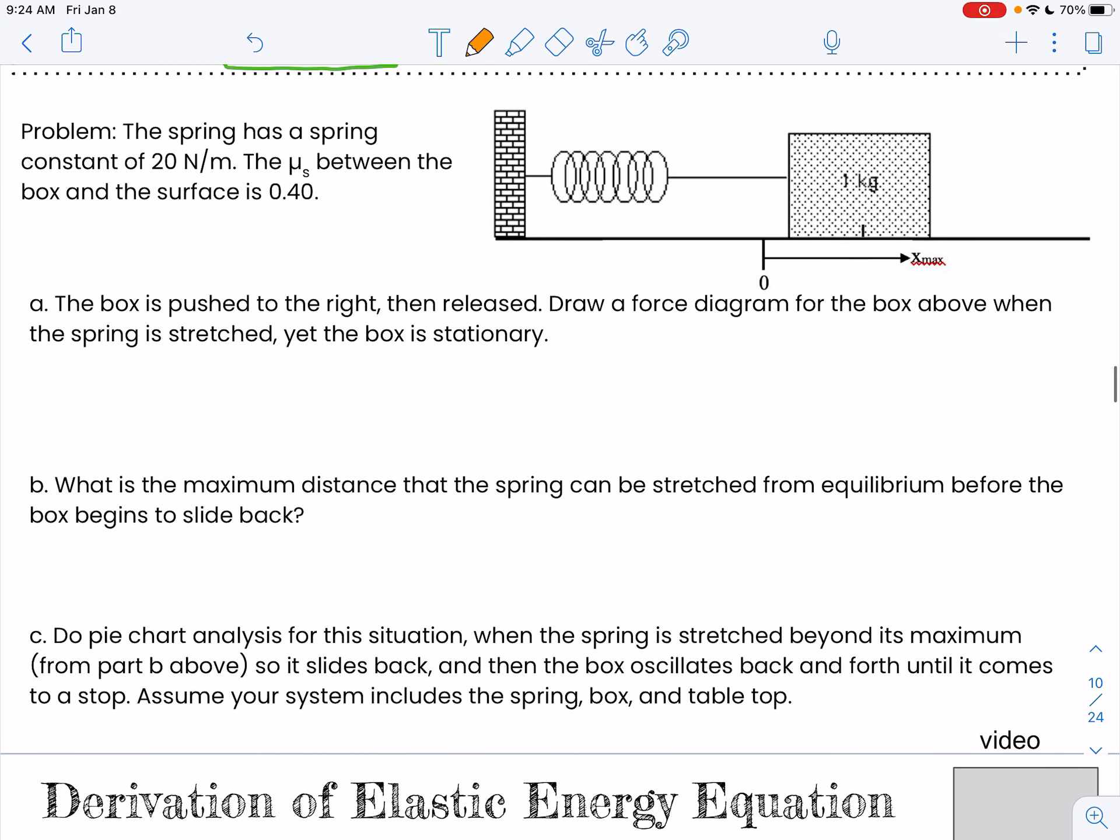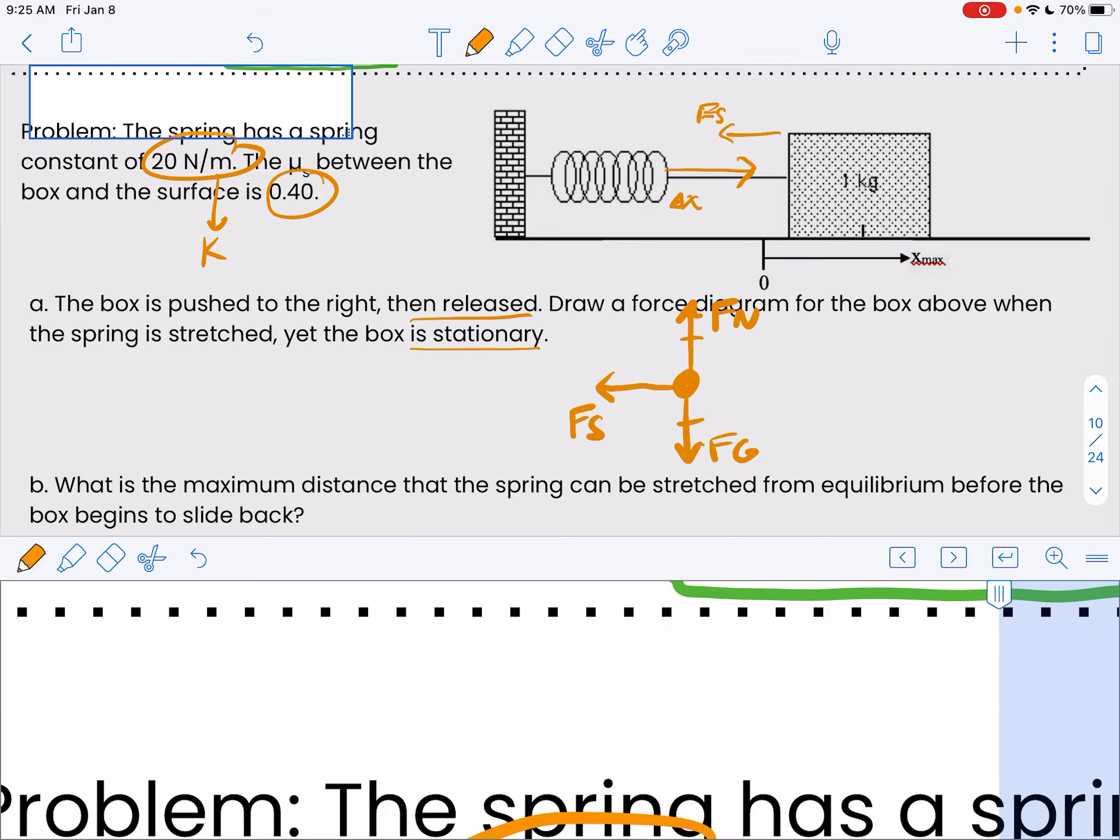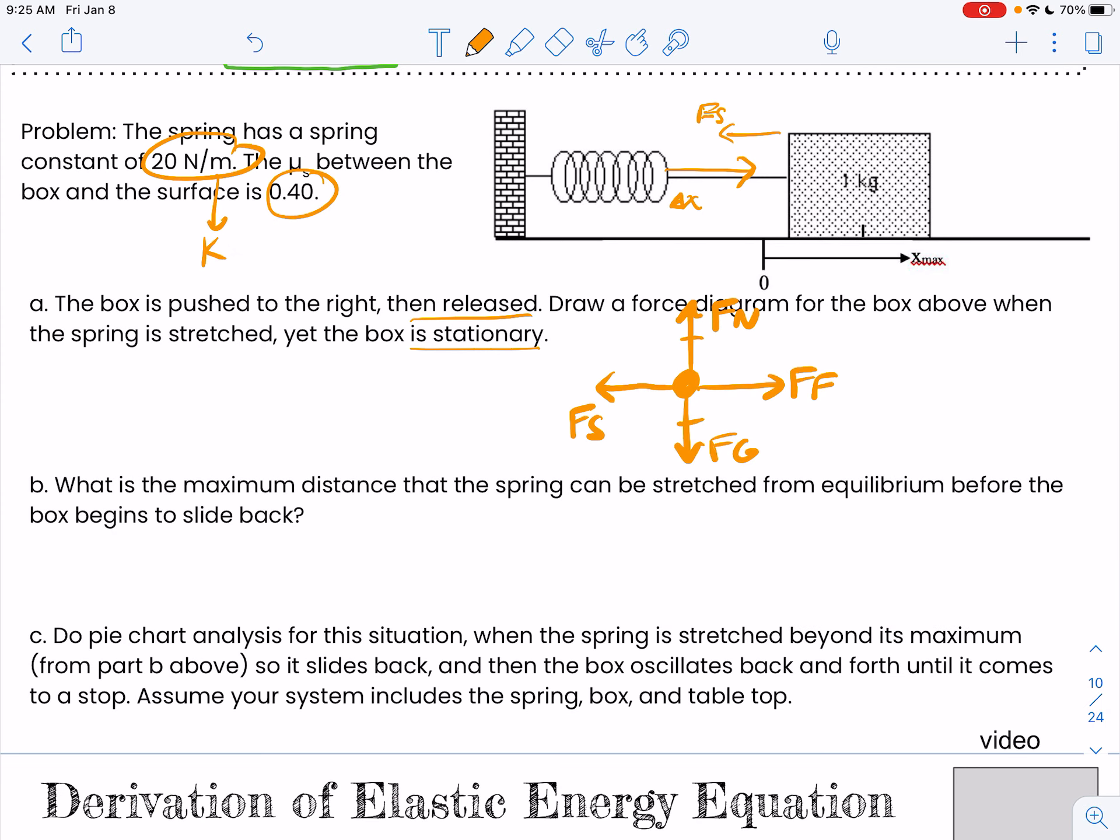In practice, it would look something like this. The spring has a constant of 20 newtons per meter, so that's my k. And there's my mu. If I push this box to the right and then release it, what would it look like if the spring is stretched but the box is stationary? My box here would have my Fg and my FN on the box, which would be equal, because up and down the box isn't accelerating or even moving. The spring, if I stretch this spring out, my Δx, I know the force is going to be opposite because of that negative sign. I have a spring force trying to pull the box to the left, but if it doesn't move, that means there has to be a friction to the right. That would be what's balancing that out.